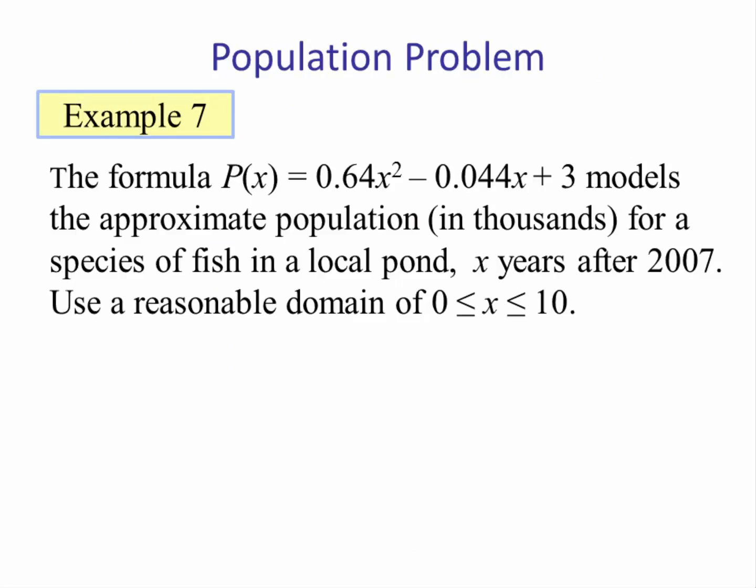The formula P(x) equals 0.64x squared minus 0.044x plus 3 models the approximate population in thousands for a species of fish in a local pond, x years after 2007. Use a reasonable domain of 0 less than or equal to x less than or equal to 10.